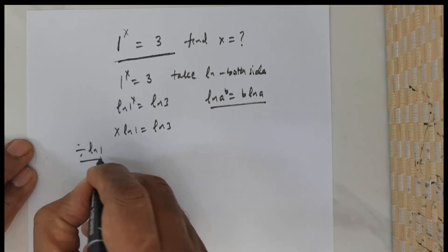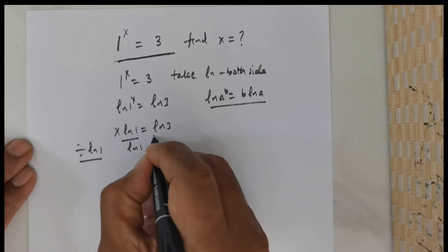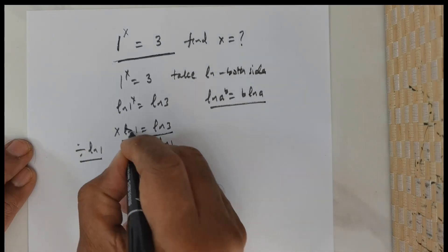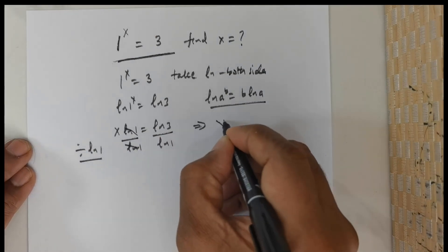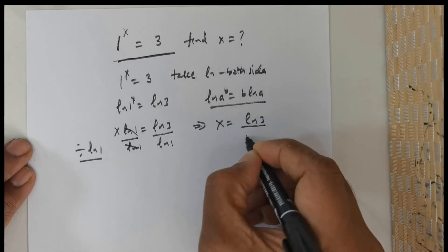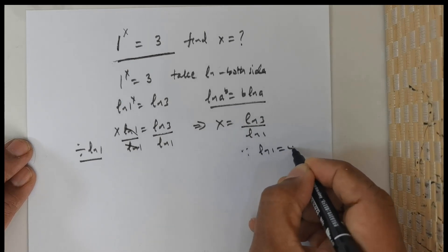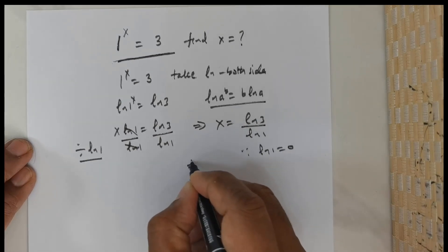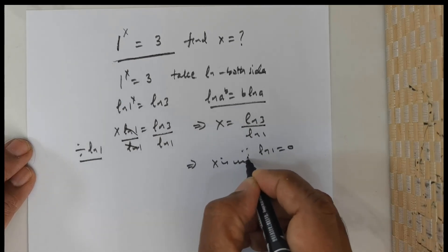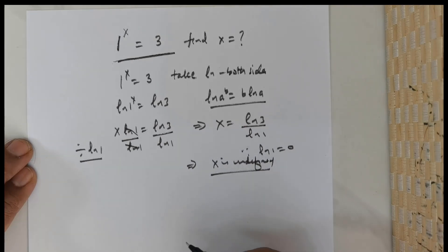Then I am going to divide by log 1. Now clearly log 1 and log 1 cancel, giving me x is equal to log 3 divided by log 1. But log 1 is equal to 0. So this means x is undefined.